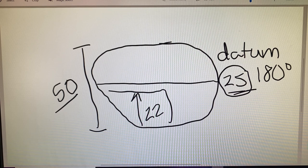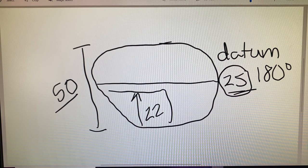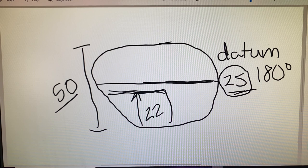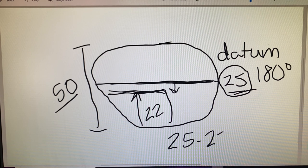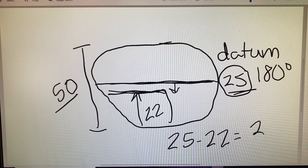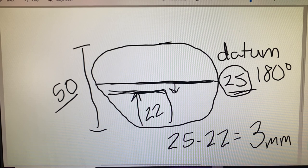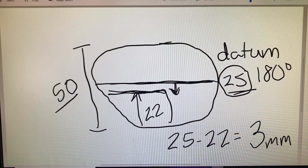Vertical decentration is basically saying how far away is this top segment line of 22 from our datum line at 25. We do 25 minus 22, which tells us the difference between the datum and the seg, which in this case ends up being 3 millimeters. Because the seg height of 22 sits below the datum line, we would say that it is 3 millimeters below the datum.